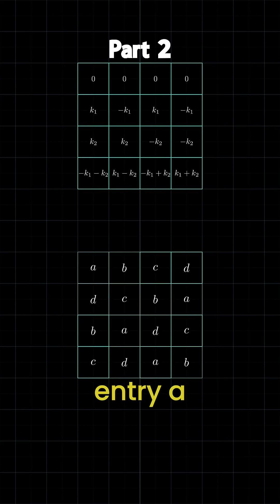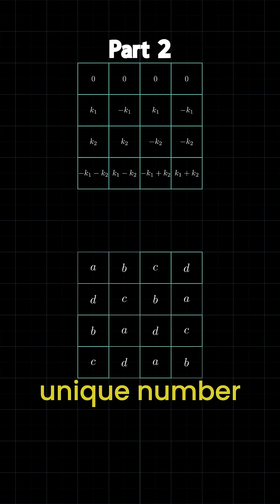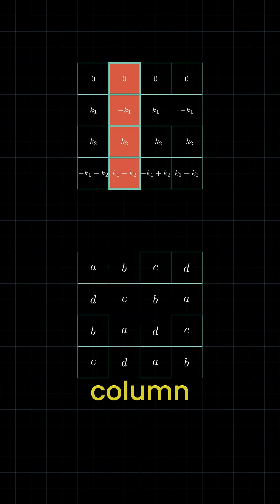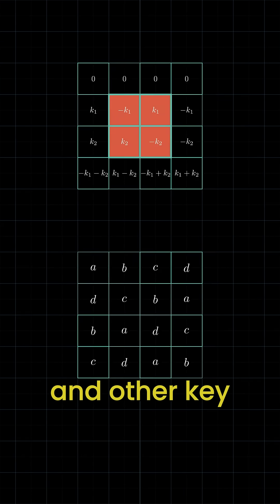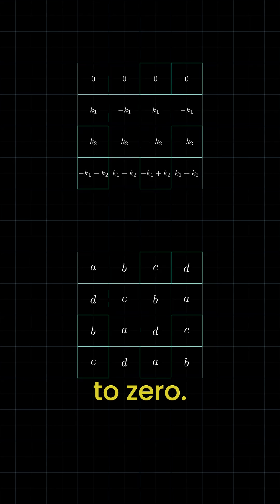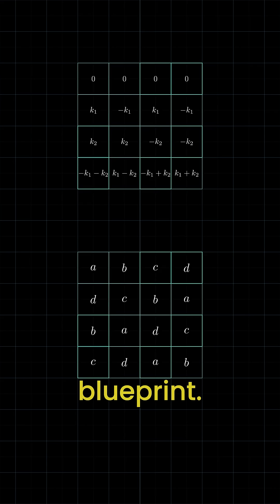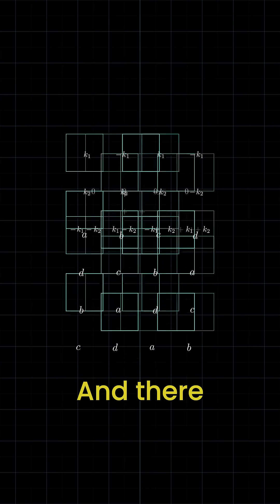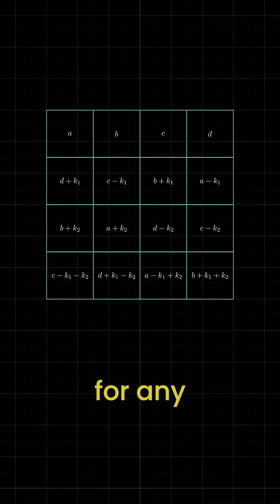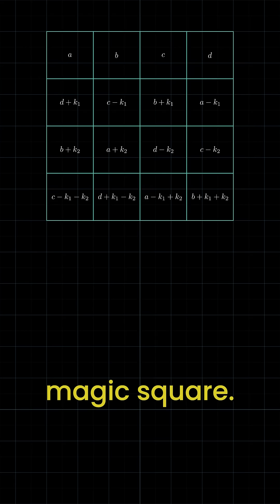To make each entry a unique number, we add another square where each row, column, diagonal, and other key subset sums to zero. Let's combine this zero-sum square with our letter-based blueprint. And there you have it — a template for any magic square.